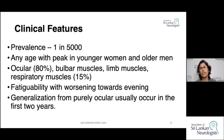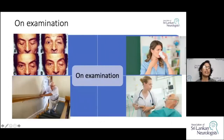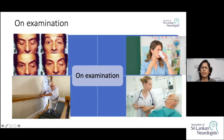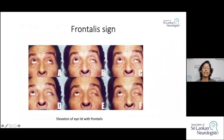Weakness worsens towards evening. In patients presenting with ocular manifestations, about 80% progress to generalized disease within the first two years. Photographs demonstrate this progression — asking the patient to close and then open the eyes reveals ptosis, which worsens in subsequent photographs. The series shows difficulty swallowing, difficulty climbing steps, and in the worst cases, respiratory failure.